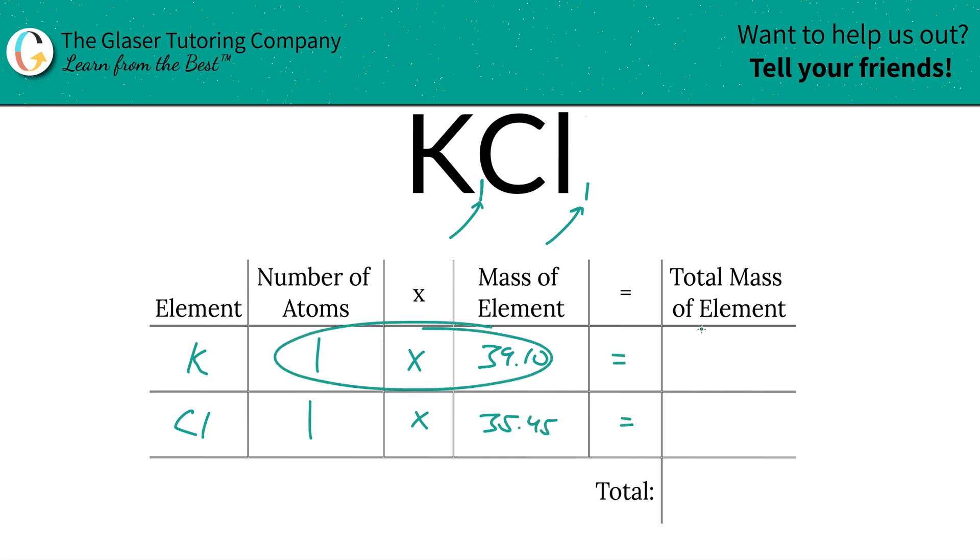And all we're simply going to do is multiply the row across to find the total mass of the element. That's the next step. So here, the total mass of potassium is going to be 39.10. Total mass of chlorine is then going to be 35.45.